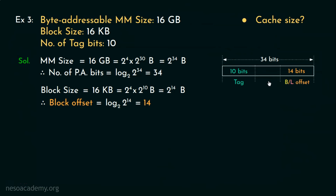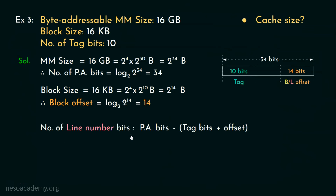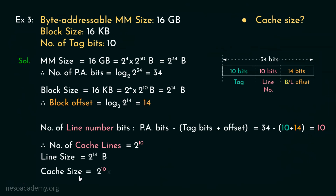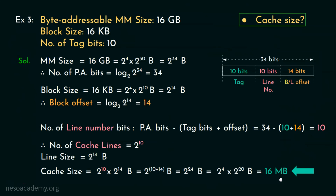To find the line number bits, we subtract the tag bits and offset bits from the PA bits: 34 minus 10 minus 14 equals 10 bits for the line number. From these 10 line number bits, there are 2 to the power 10 lines in the cache, each with a line size of 2 to the power 14 bytes. Therefore the cache size is 2 to the power 10 multiplied by 2 to the power 14 bytes, which is 2 to the power 24 bytes — that is 16MB — the answer we were looking for.